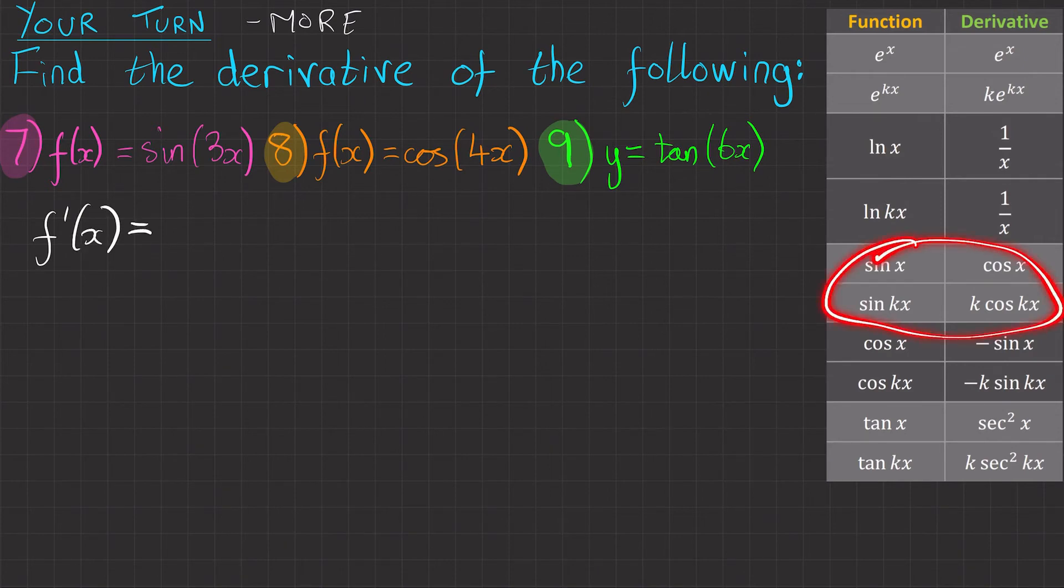but we want this second one here. So sin kx becomes k cos kx. So this becomes 3 cos 3x.